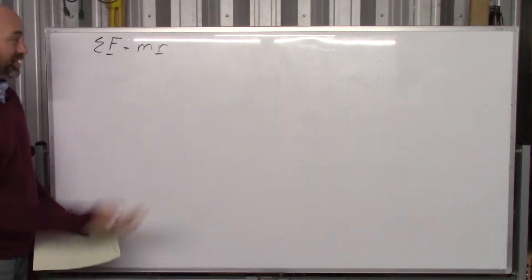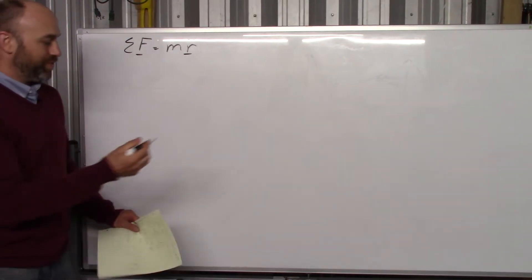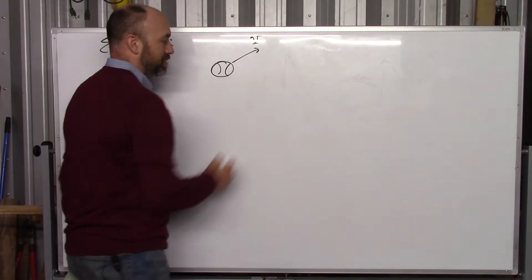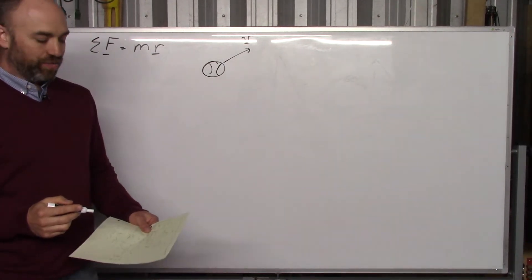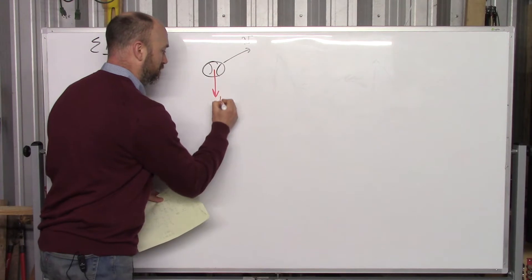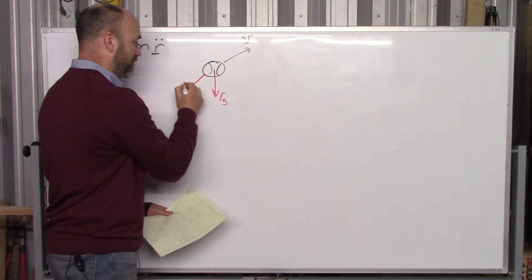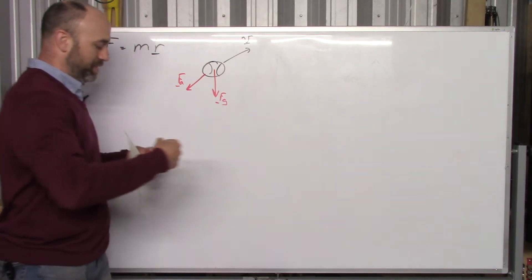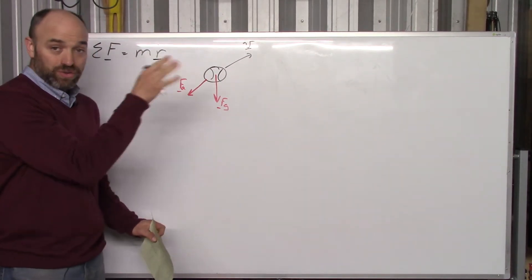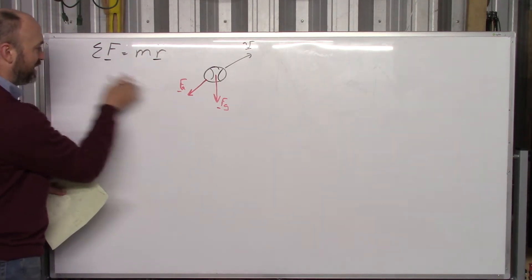As with everything in this class, we start with Newton's second law. If you've got a baseball flying through the air, where's the air friction? Well, air friction opposes motion. The forces on this ball are gravity pulling it down, and air friction going opposite to the direction of motion. So you've got force of gravity and force of air friction — these are the two forces on the ball — and that's going to cause it to slow down whichever way it's going.